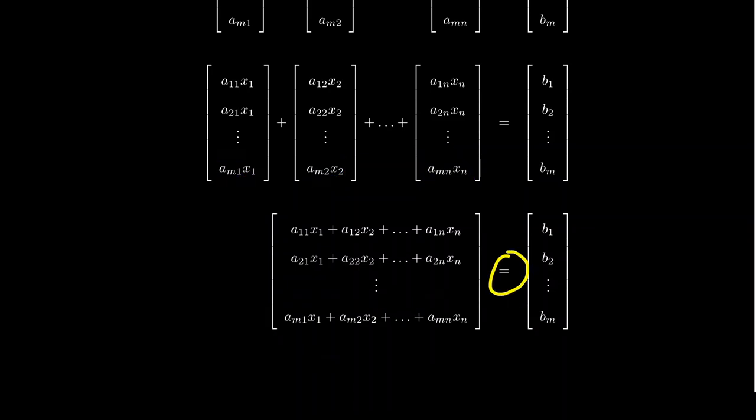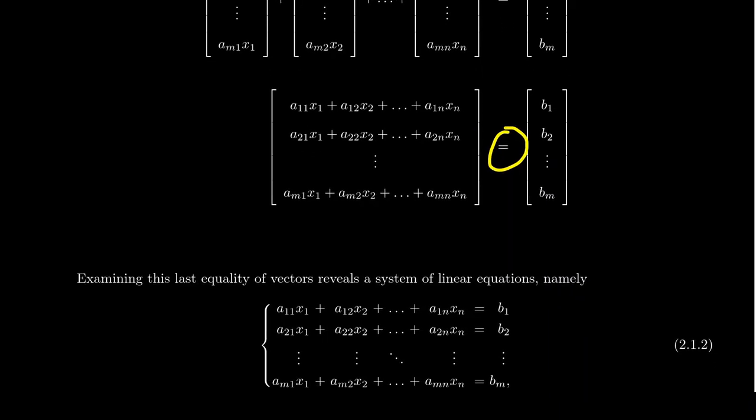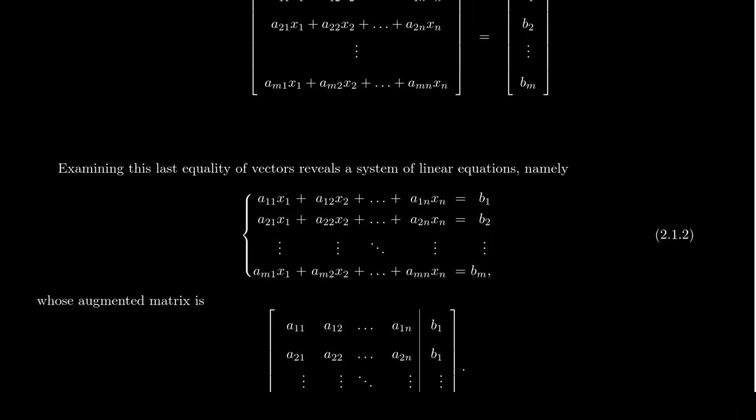Now, when you have two vectors that are equal to each other, the only way that two vectors are equal to each other is if component-wise they agree. The first components agree, the second components agree, the third components agree, the nth components agree. That's what vector equality means. So if we equate the first two entries together, we get the following linear equation. We see that a11x1 plus a12x2 plus a13x3 plus a14x4 all the way down to a1nxn is going to equal b1. And we do that for the second entry, which gives us the second equation. We do that for the third entry, the fourth entry, the fifth entry, all the way down to the mth entry.